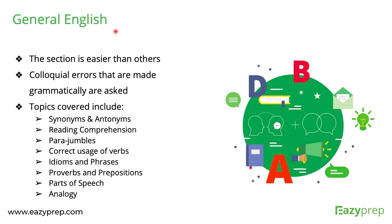General English is relatively easy overall, simply because you've been studying English throughout school and boards. Topics asked include vocabulary, synonyms and antonyms, reading comprehension, para-jumbles, correct usage of verbs, idioms and phrases, proverbs and prepositions, parts of speech, and analogy.